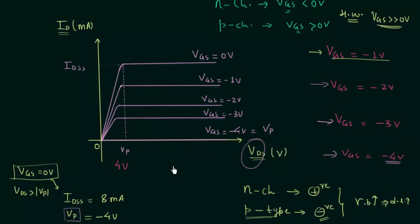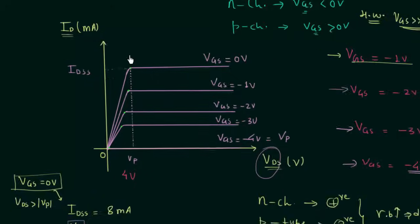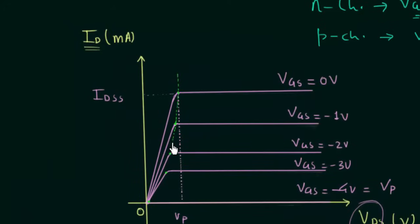For P-channel JFET, instead of making VGS more and more negative, we make it more and more positive. Now we draw the locus of pinch-off voltages by identifying the pinch-off point on each curve — the first, second, third, fourth, and fifth pinch-off voltage points. Joining these points gives us the locus of pinch-off voltages.